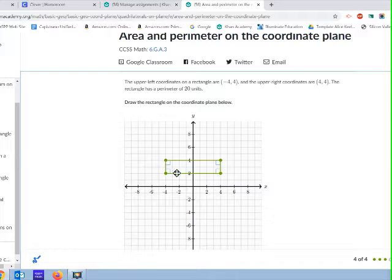So let's see. Would this have a perimeter of 20? It looks like that's 8 units, and of course this would be 8 units. And this is 2 units. So 2 eights would be 16 and 2 twos would be 4. So yeah, that has a perimeter of 20.